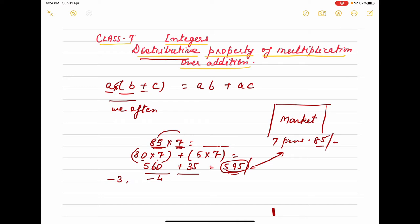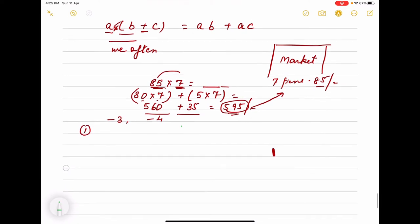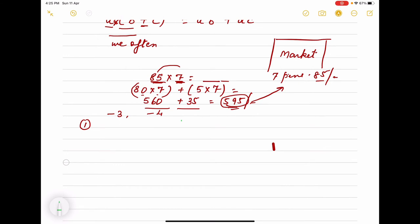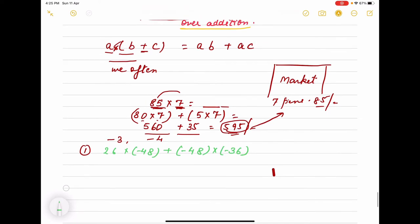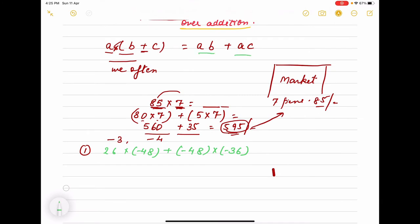Suppose I am giving you some examples so that it will be helpful to you to solve. Like first example this is 26 into minus 48 plus minus 48 into minus 36. It is just reverse. You see that it is AB plus AC form. AB plus AC form where you have to find out which one is common. Like here A is common. So can we check that which number is common? So 26 into minus 48. Again minus 48. So minus 48 we have common.